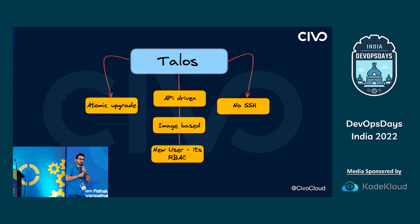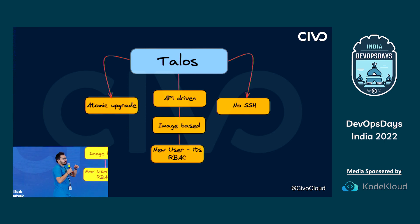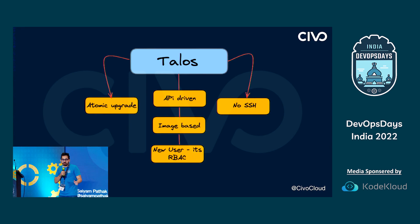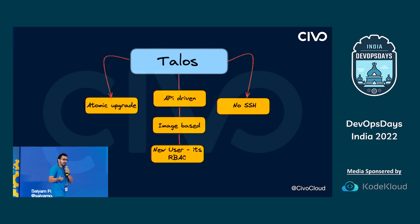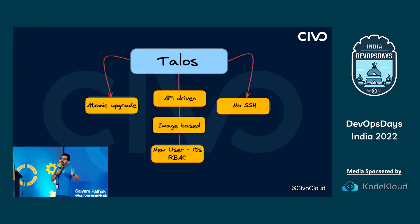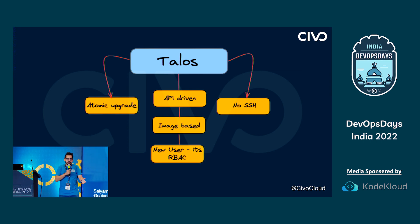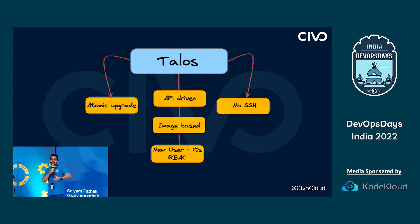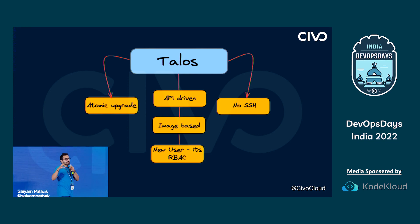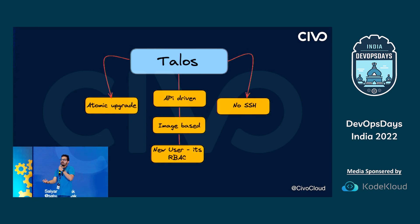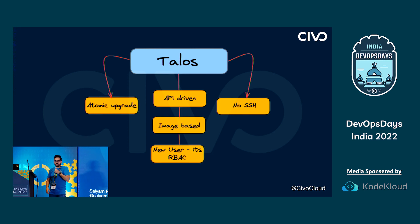Atomic upgrades mean that either the upgrade succeeds or it doesn't — some part is never left half-upgraded. It is image-based, so the same image runs in the same way across all cloud providers. For user experience, following the Kubernetes way, it's RBAC enabled — whenever there's a new user, you handle it via RBAC. Essentially it follows the Kubernetes-native approach, bringing the power of controllers to the OS layer.